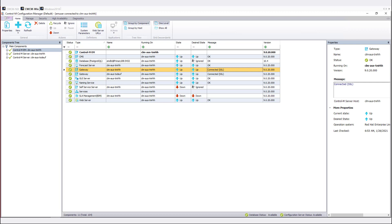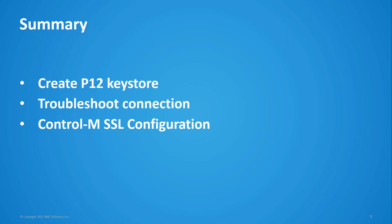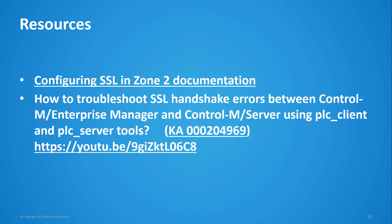This concludes our demo. In summary, we generated a CSR and created a dot P12 keystore and deployed the certificate. We tested the connection and then updated the Control-M configuration to use SSL. Here are the resources for this process. First is our documentation for configuring SSL in Zone 2. The second is how to troubleshoot SSL handshake errors between the Control-M Enterprise Manager and Control-M Server using PLC underscore client and PLC underscore server tools. This knowledge article number is KA000204969 and includes a YouTube video.